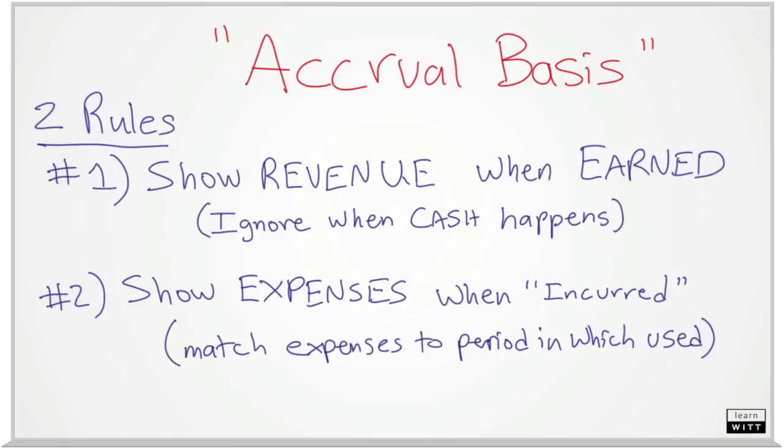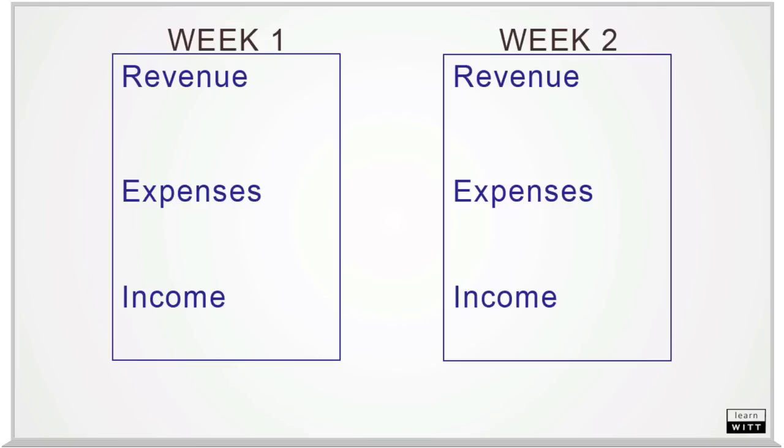If Jim's story was going to be told using these two rules, how would it be told? First, in week one, how much money was earned? We do not care how much cash he received. We only care how much he earned. Even though he has not gotten paid yet, he has still earned $10 in week one.